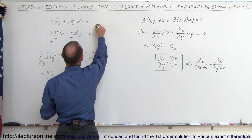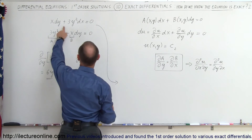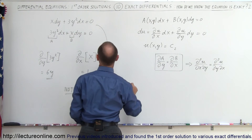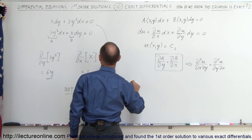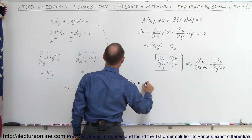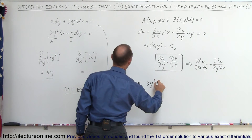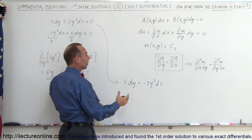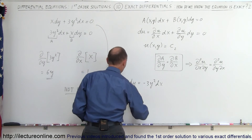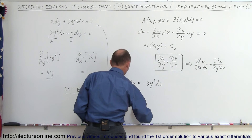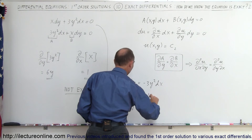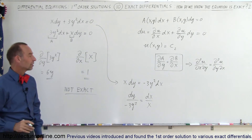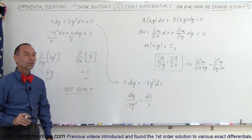Instead, to solve the equation we have to separate the variables. Move the term to the other side to get x dy equals minus 3y² dx, then rearrange to get dy divided by minus 3y² equals dx divided by x, and then integrate both sides to find the solution.